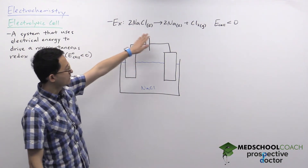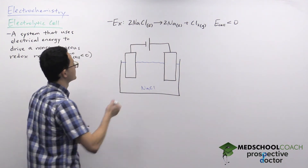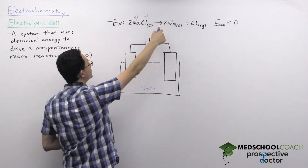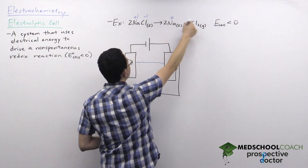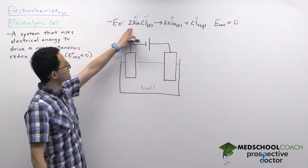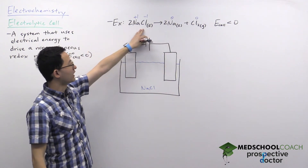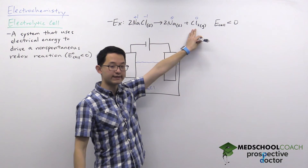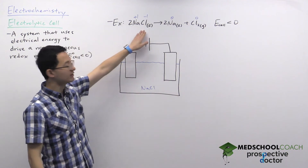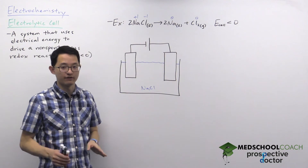Looking at the reaction, we can examine the oxidation states. In NaCl, sodium is +1 and chlorine is -1. In Na metal it's 0, and in Cl₂ it's also 0. So Na⁺ is getting reduced — it's gaining an electron — and the chloride ion is losing an electron to form chlorine gas. This also shows why the process is non-spontaneous: a halogen losing an electron to an alkali metal is not a favorable process.